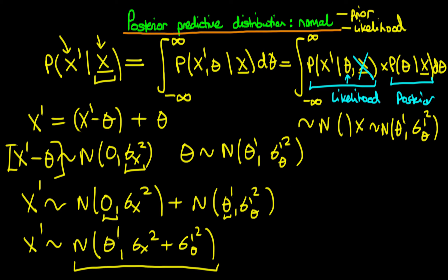The posterior predictive distribution is full of intuition. Remember that theta is essentially the mean test score we expect, so it comes as no surprise that the mean value of x-primed we should expect is itself theta-primed. It should also come as no surprise that the variance is the sum of the datum variance, sigma-squared-x, plus the variance of our posterior distribution, sigma-squared-theta-primed — in other words, our uncertainty about the value of theta obtained after our first experiment. To be clear, sigma-squared-x is the variance of our new data point x-primed, assumed here to be the same as the variance of the original data points.